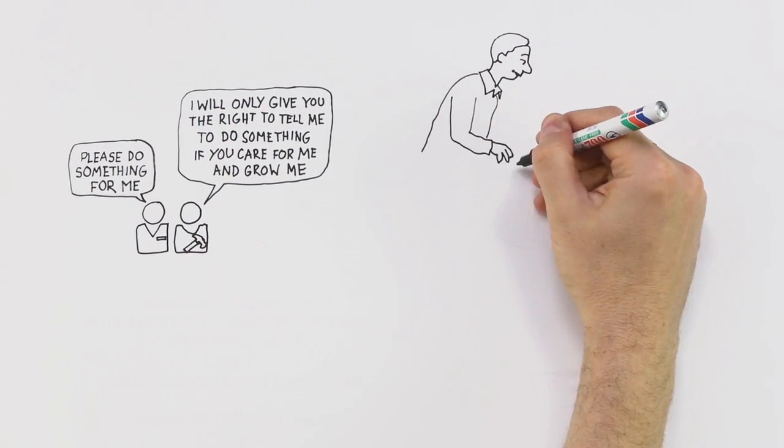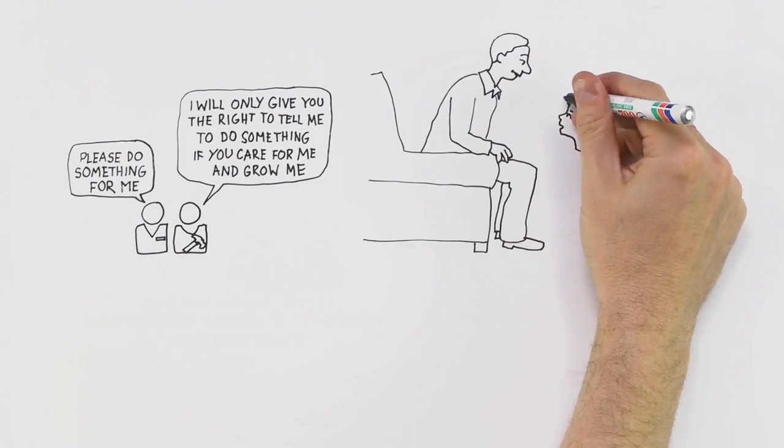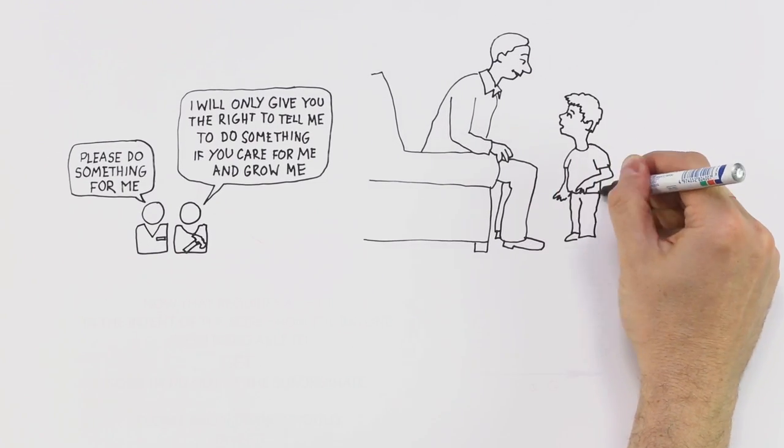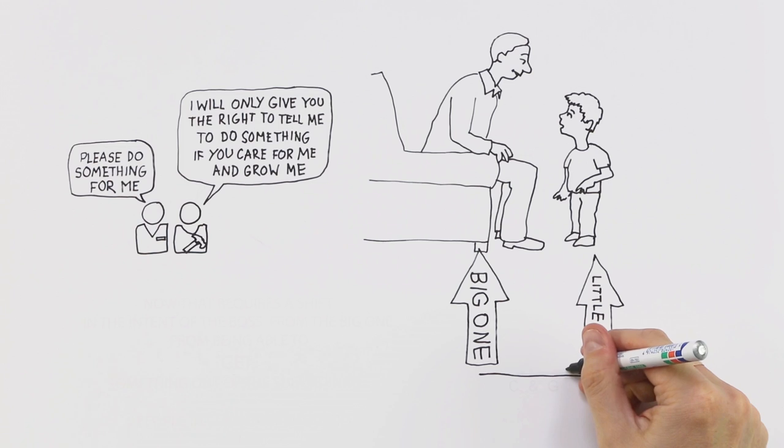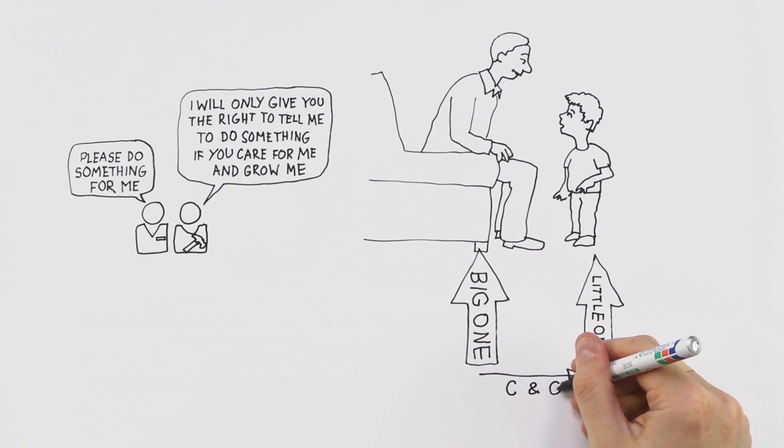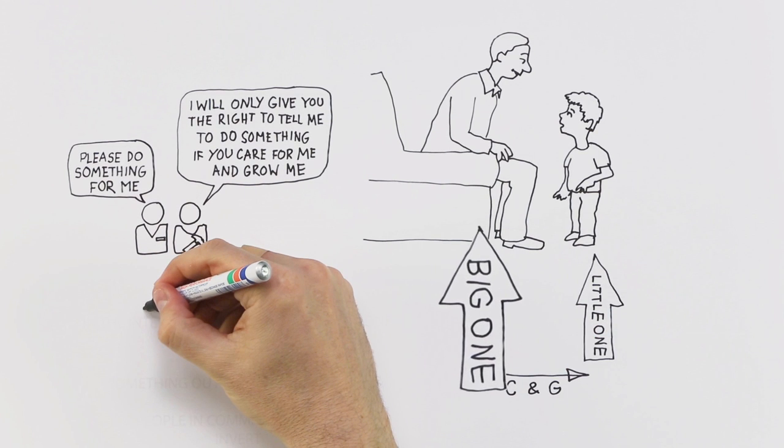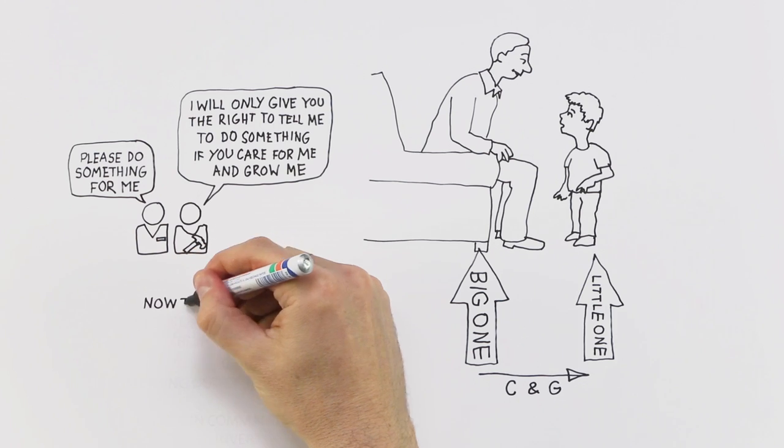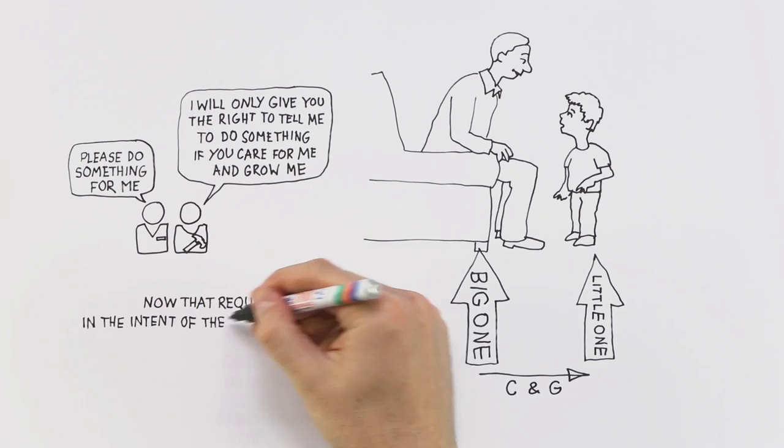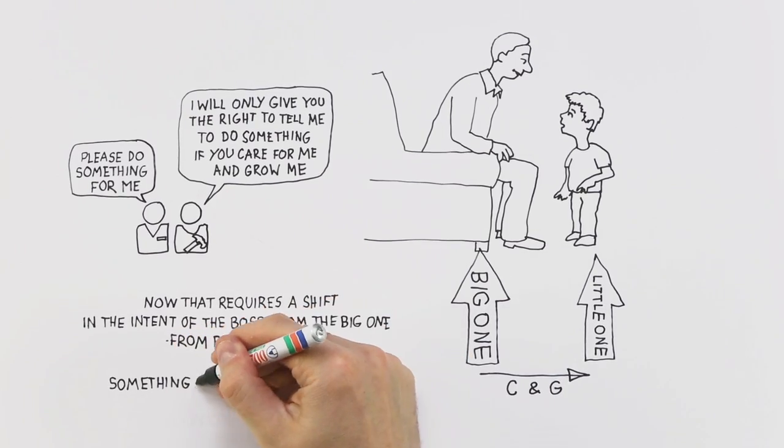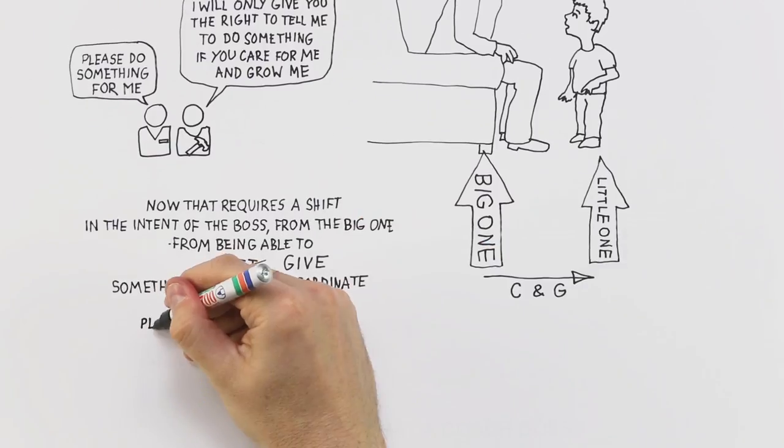The first relationship of power you have with another person in your life is with your parents. And there are two people in that relationship. There's a big one, and there's a little one. The job of the big one for the little one is very specific. It's care and growth. In other words, the job of the big one for the little one in any relationship of power is care and growth. Now that requires a shift in the intent of the boss from the big one. From being here to get something out of the subordinate, to being here to give something to the subordinate.